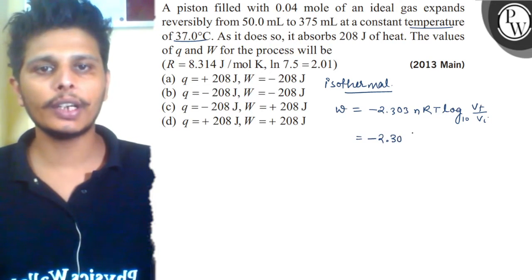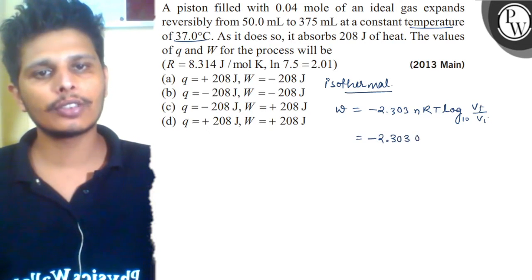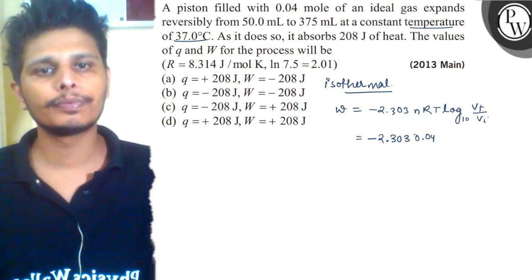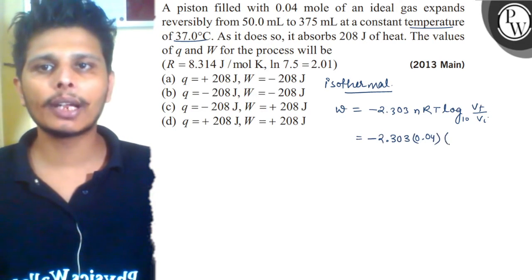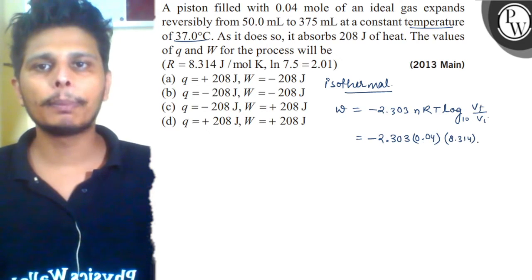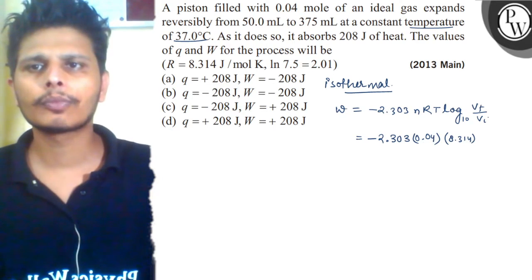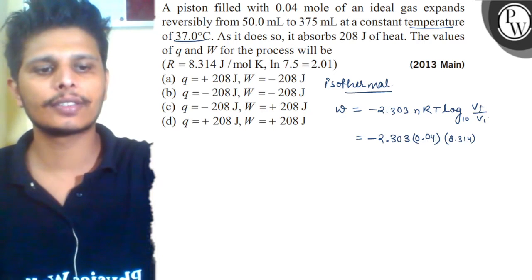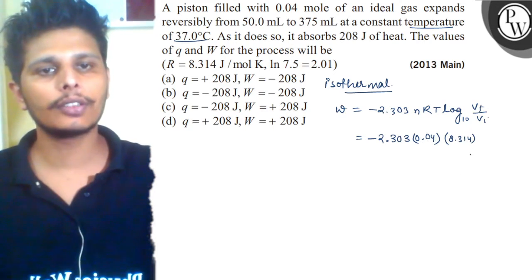2.303, n value is 0.04, R value is 8.314. Temperature is 37 degree Celsius, which is 310.